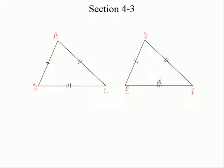So if I took this triangle and put it right on top of here, these corresponding sides — hear what I said? — the corresponding sides must be equal to each other. What else do you think must be equal to each other if I could take this triangle and fit it right on here? The angles. Corresponding angles would be equal to each other.